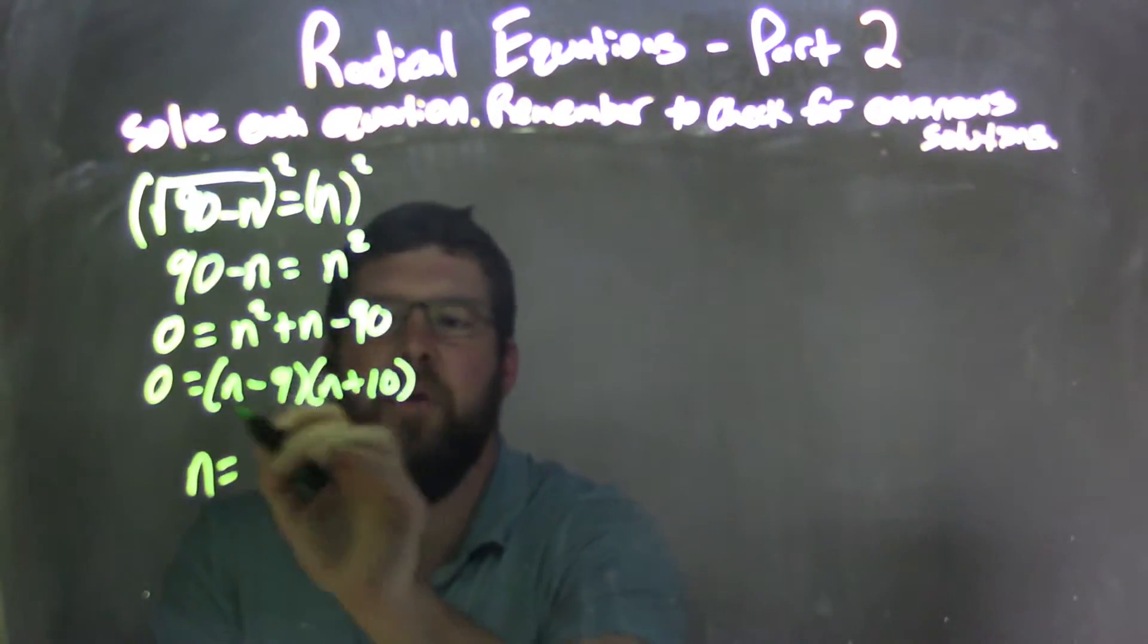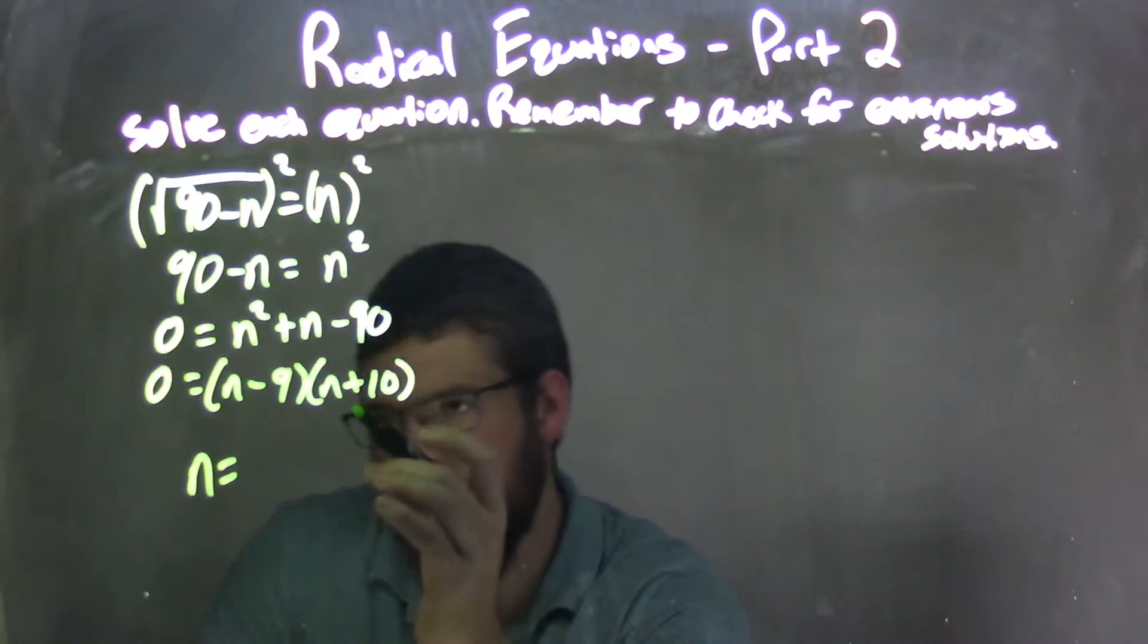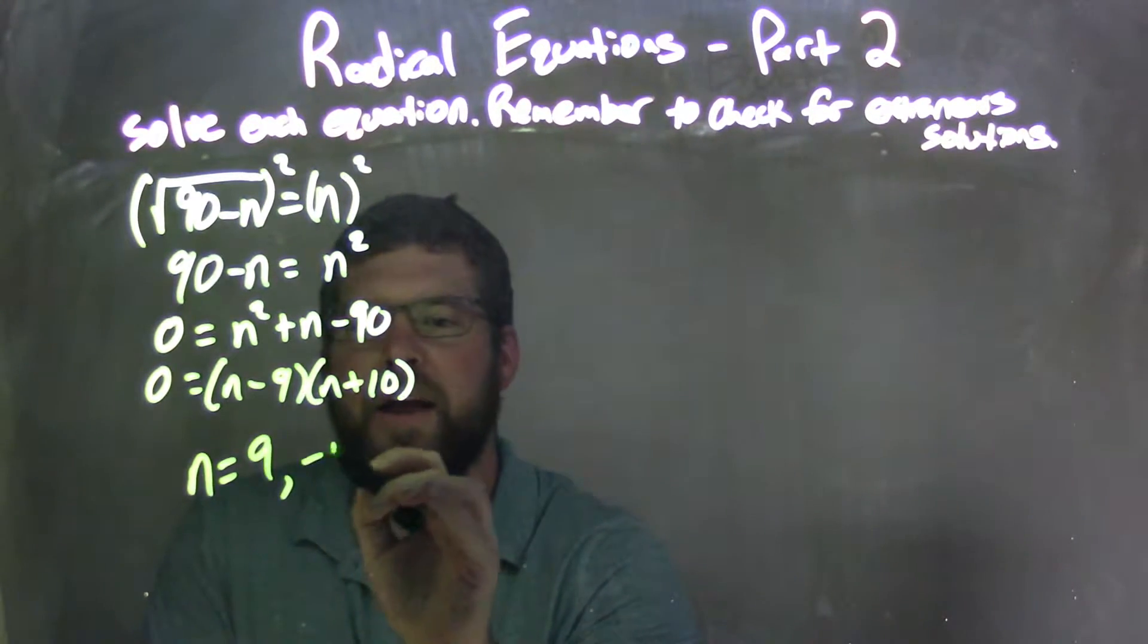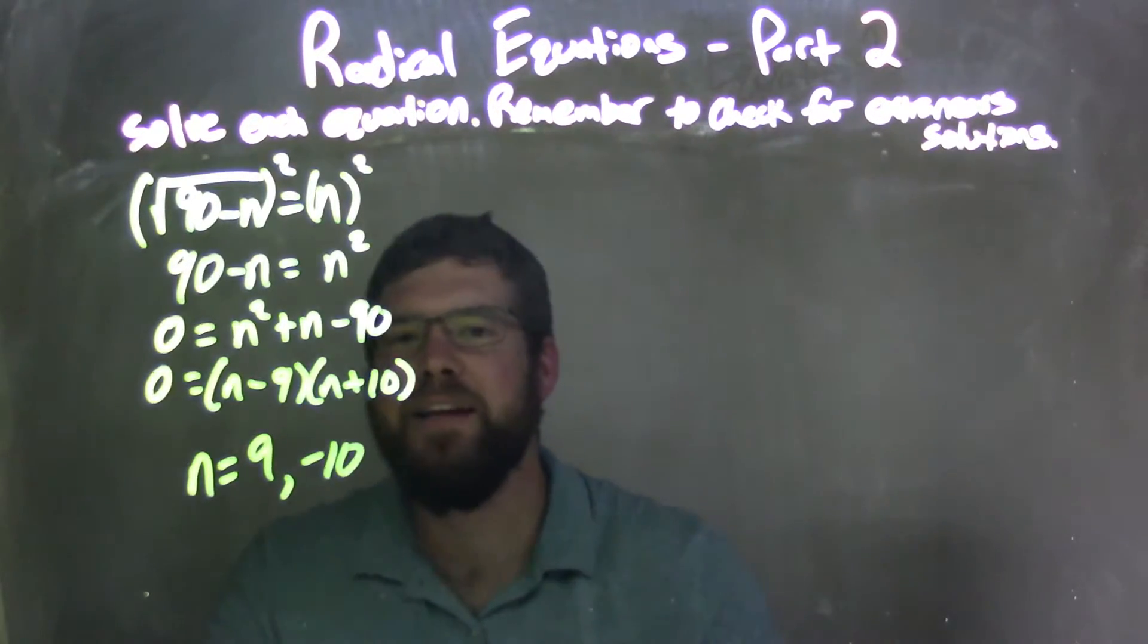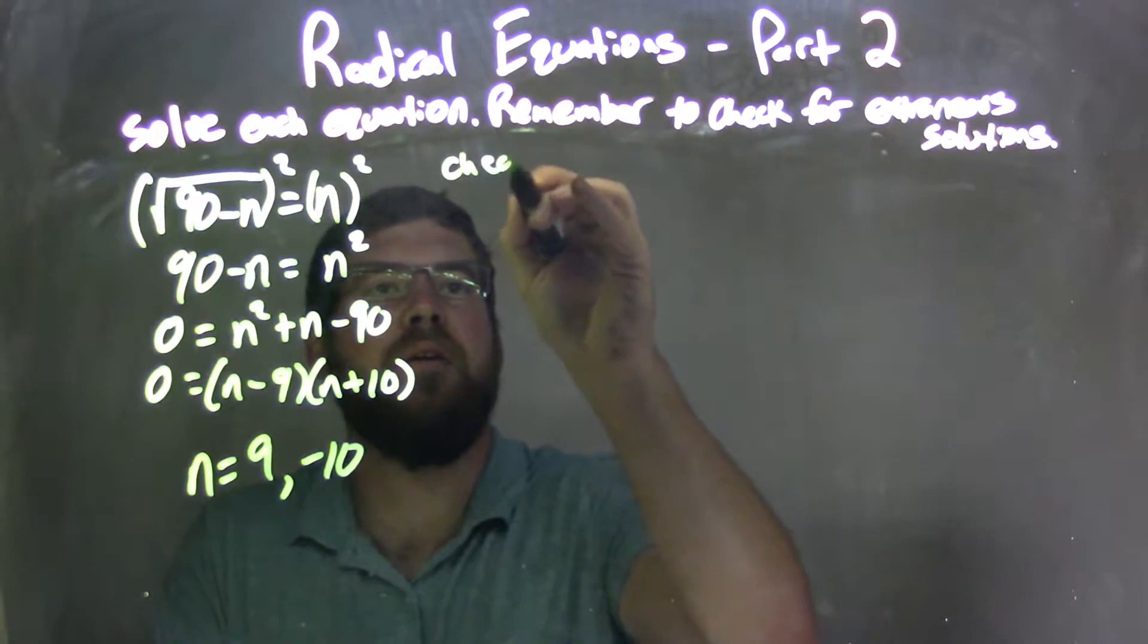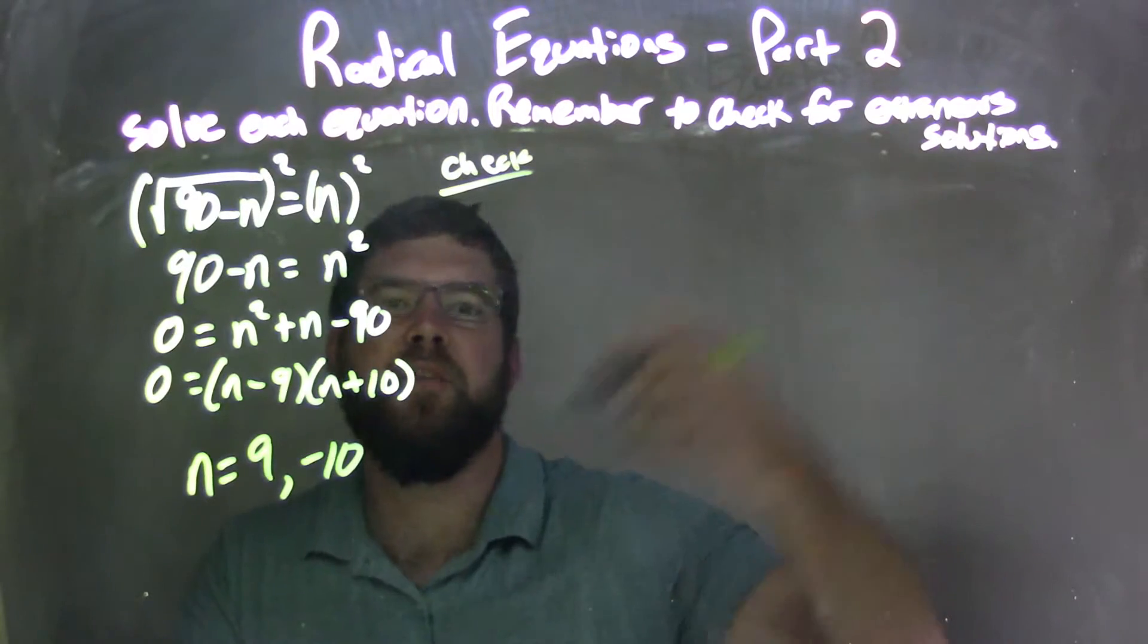So with that, I know my two solutions because I set both of these parentheses equal to 0. And solve: n equals positive 9 and negative 10. So now I need to check my work, not just my work, but for really extraneous solutions here.